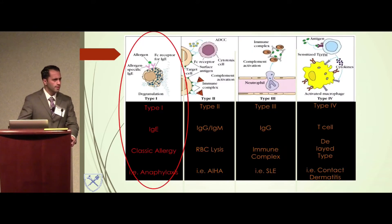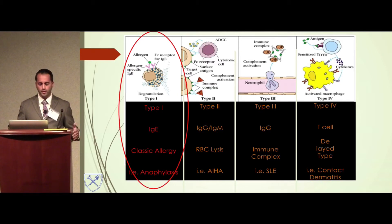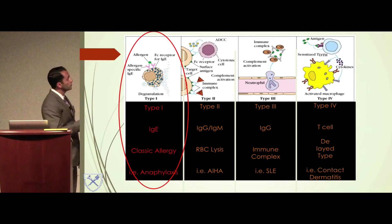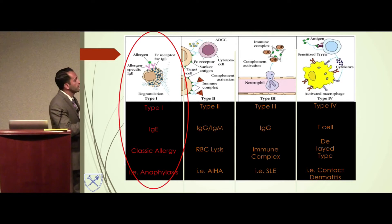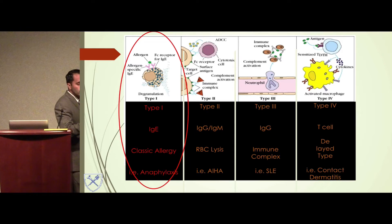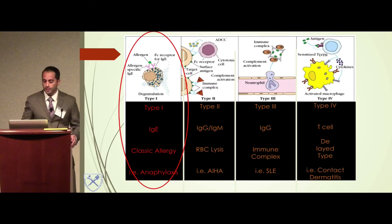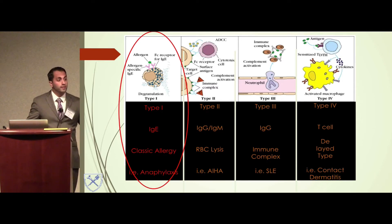A Type 1 reaction is an IgE-mediated response. Type 2 involves IgM and IgG — it binds and causes red blood cell lysis; a common example is autoimmune hemolytic anemia. Type 3 is only IgG causing an immune complex reaction — a common example is lupus. Type 4 involves just a T cell: the T cell is activated by the allergen and causes a delayed-type reaction, like contact dermatitis or a rash.